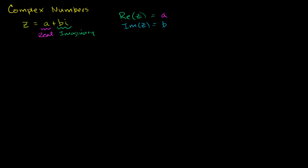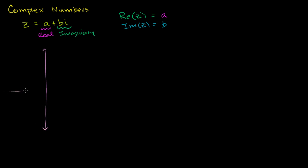One way to visualize complex numbers — and this is actually a very helpful way of visualizing it when we start thinking about the roots of numbers, especially the complex roots — is using something called an Argand diagram. It looks a lot like coordinate axes, but instead of having an x and y axis, it has a real and imaginary axis.